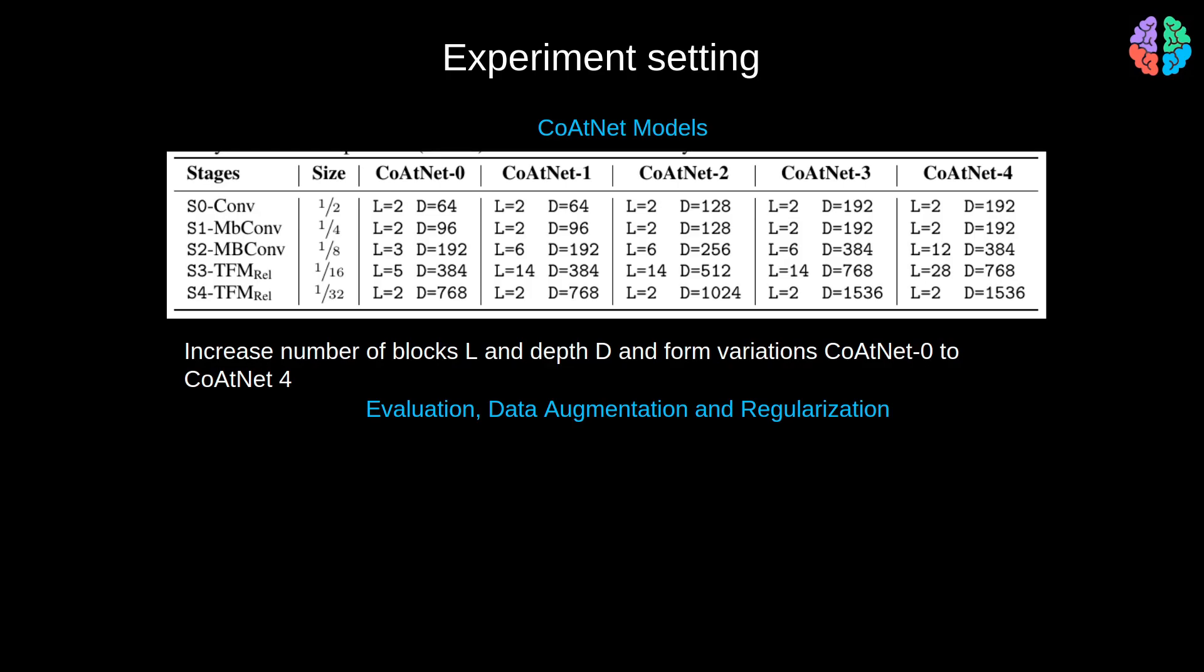In terms of the evaluation, they mainly use three datasets, namely ImageNet 1K, which is a dataset of size 1.3 million, and then ImageNet 21K, which is a dataset of about 12 million, and finally they use a proprietary dataset JFT, which is about 300 million images. They train on these datasets and finally fine-tune on ImageNet 1K.